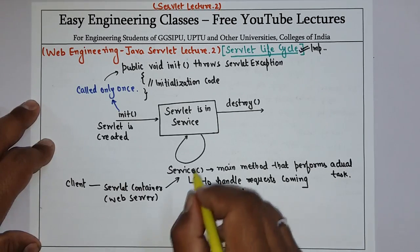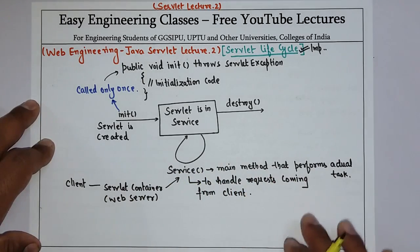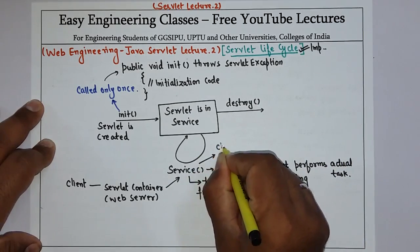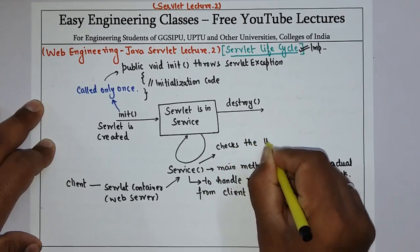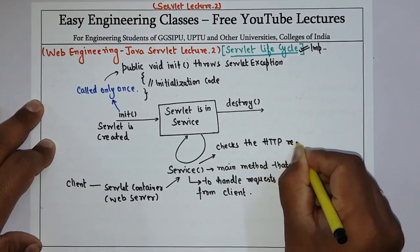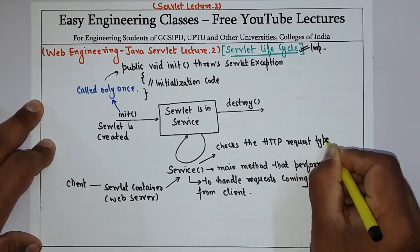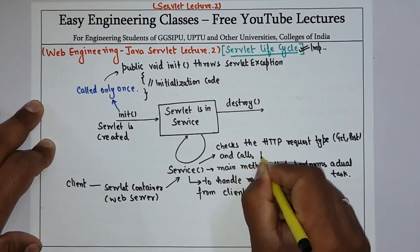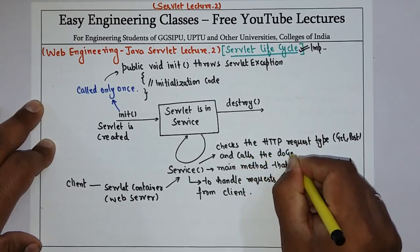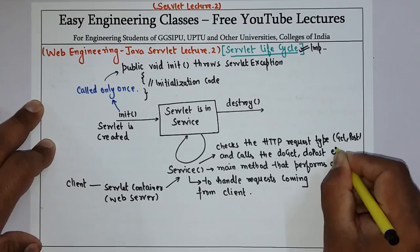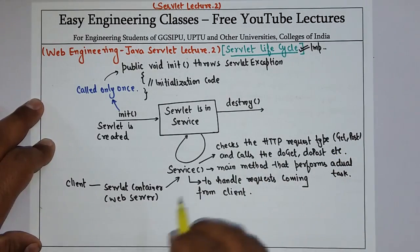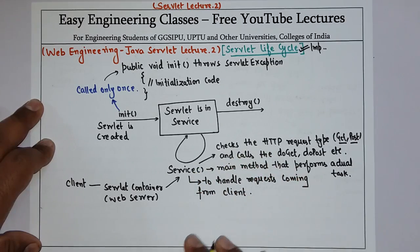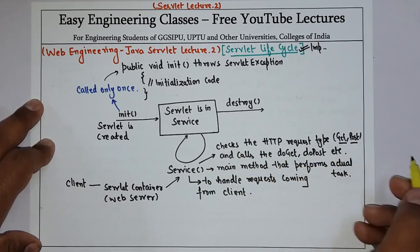Now the service method checks the HTTP request type — there are different types of methods that can be used to call the server, like POST, GET, PUT, DELETE. The service method checks the HTTP request type, such as GET or POST, and in response calls the doGet or doPost methods. So depending on the type of method — GET or POST — used to call the servlet from the HTML form, the service method calls the appropriate doGet or doPost method.